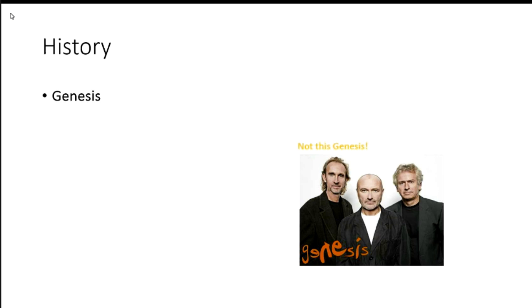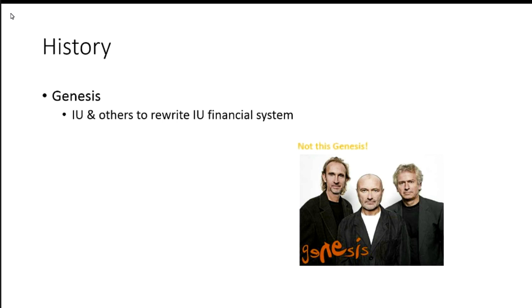How did QOLI get started? QOLI was initially just supposed to be a single system — to rewrite IU's financial system. Indiana University and a handful of other institutions — Hawaii, Cornell, Arizona, Michigan State, probably leaving out one or two — decided to get together to rewrite IU's financial system.